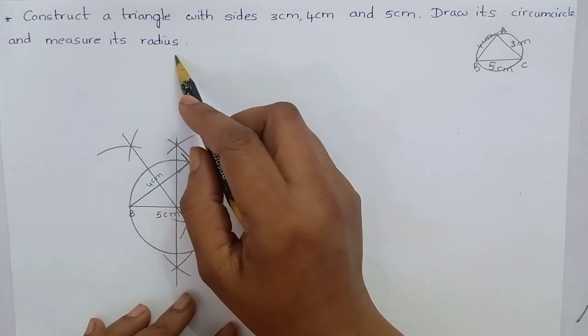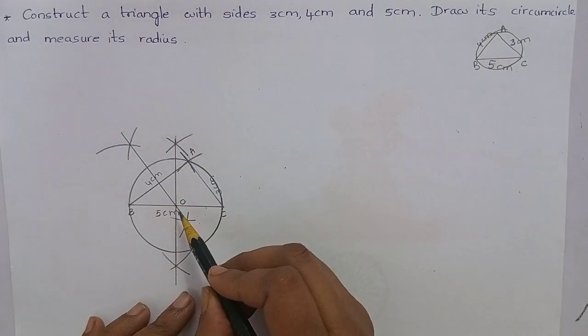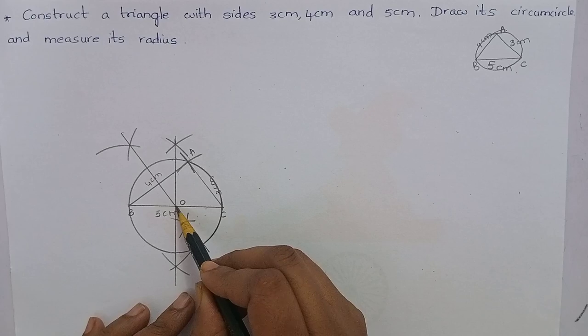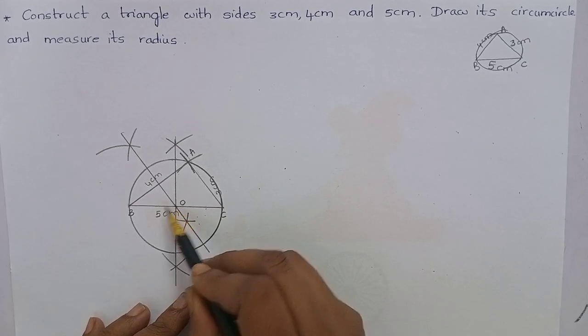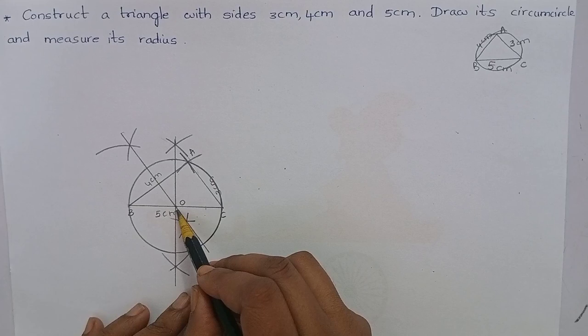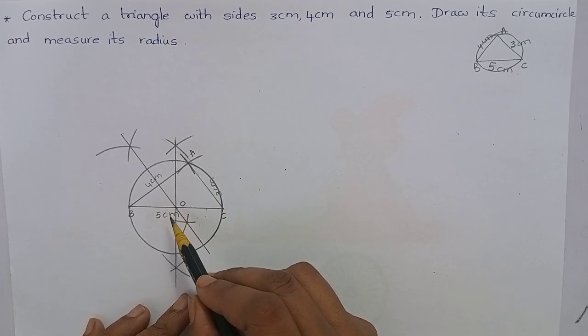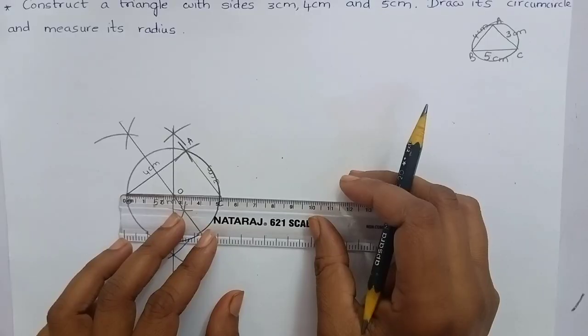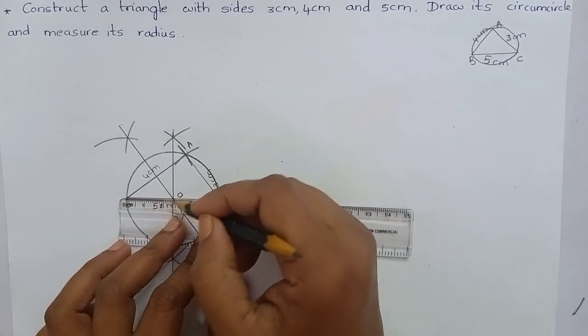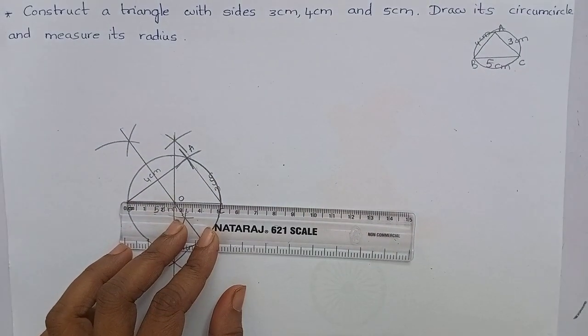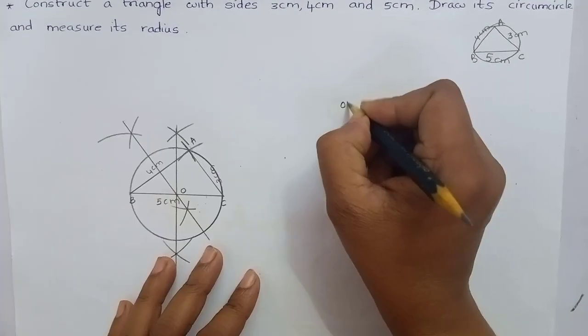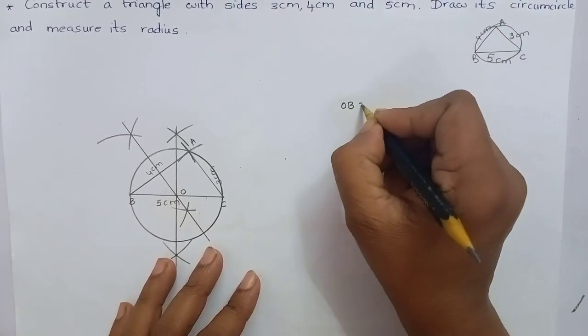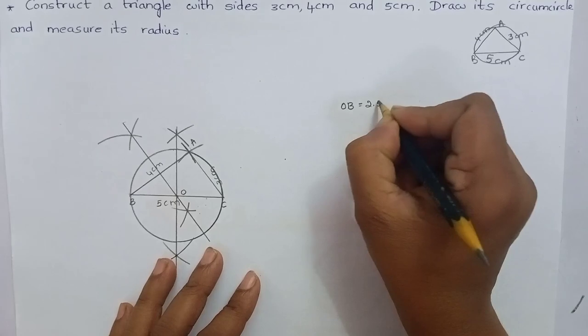Measure its radius. Now, look at this. O is the circumcenter and OB is the radius of a circle. So, let me measure the measurement of OB. OB is 2.5 cm.